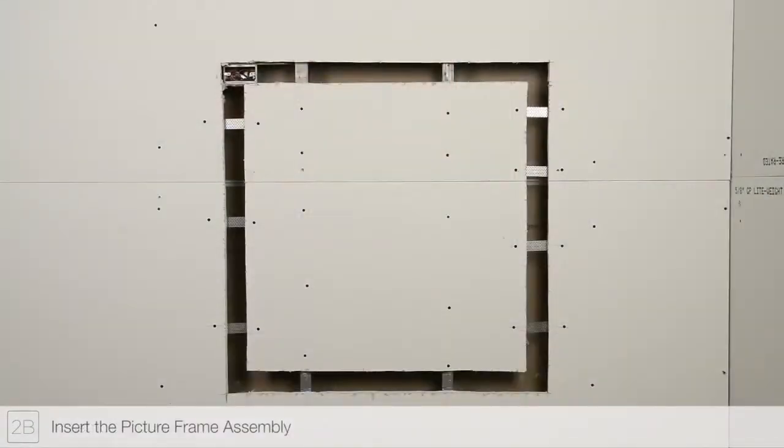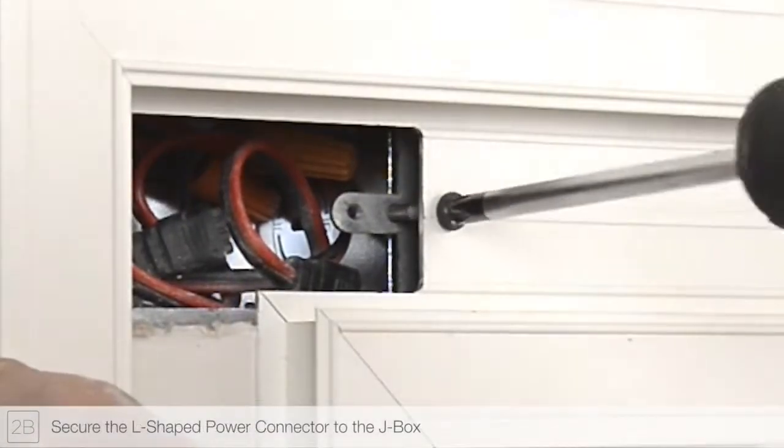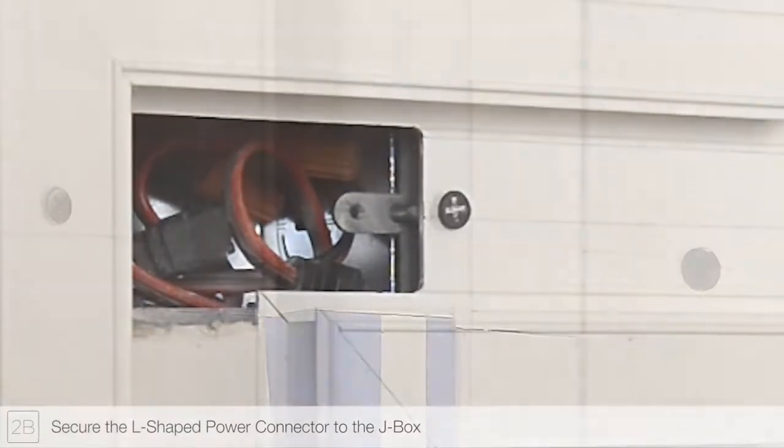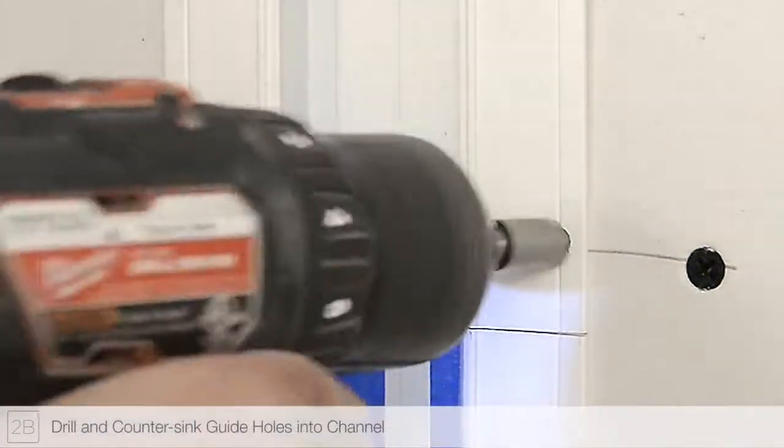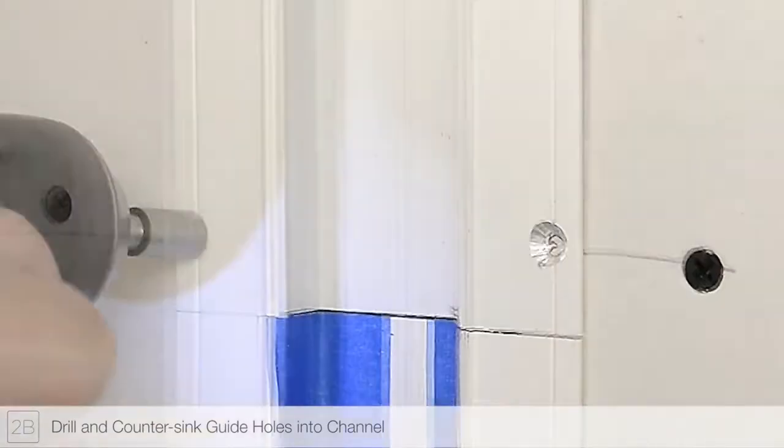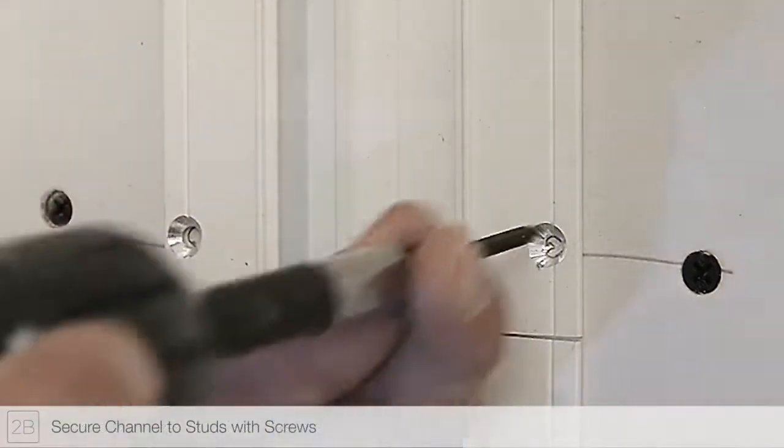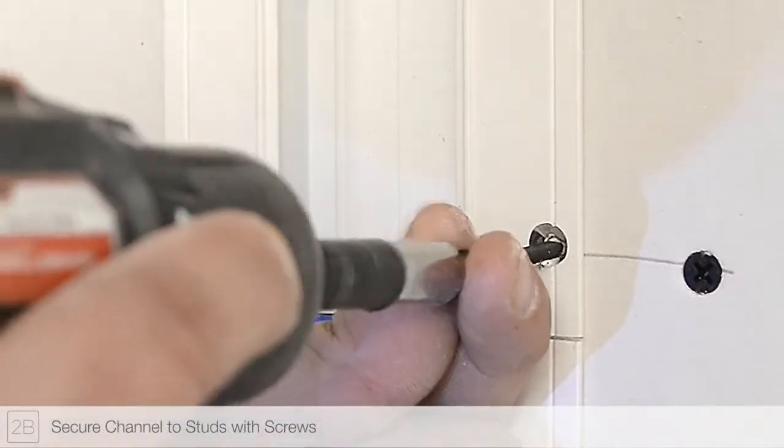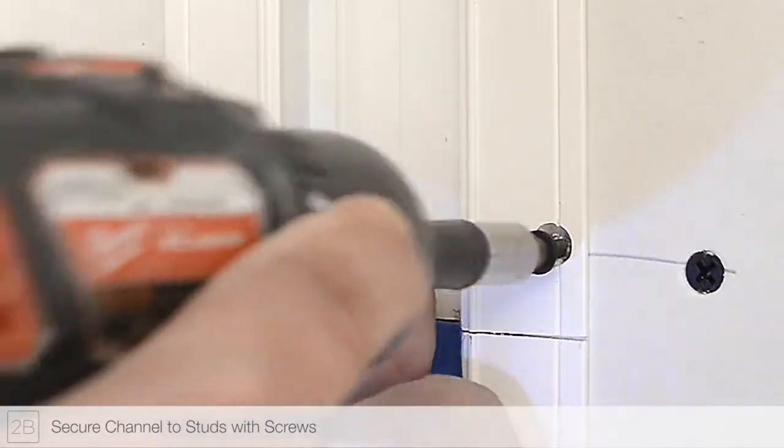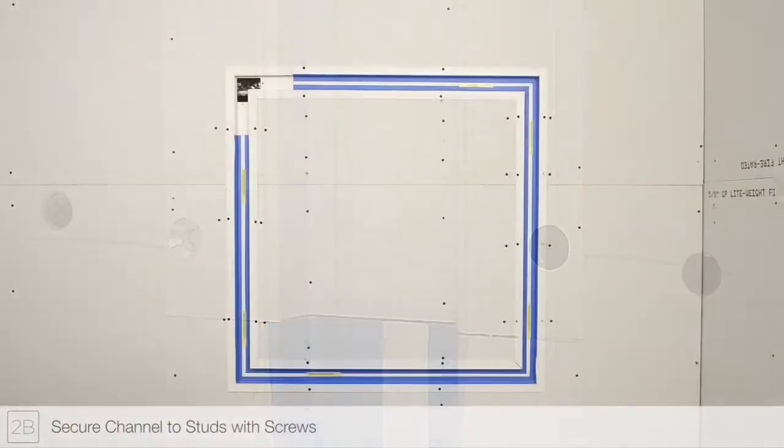Insert the true quad assembly. Secure the L-shaped power connector to the junction box. Drill and countersink guide holes using the stud markings from previous steps. Secure the true quad assembly to the drywall and mounting straps using drywall screws. Make sure each screw head is flush with the channel surface before continuing.